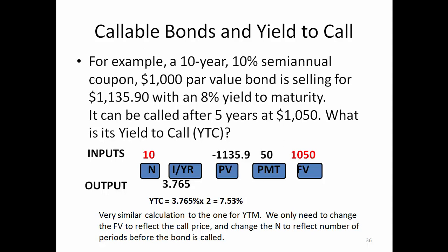For example, if we have a 10-year 10% semi-annual coupon bond with $1,000 par value, currently selling for $1,135.90 with a 9% yield to maturity — meaning if you hold the bond for 10 years till maturity — but it can be called after five years at a call price of $1,050, what is the yield to call?